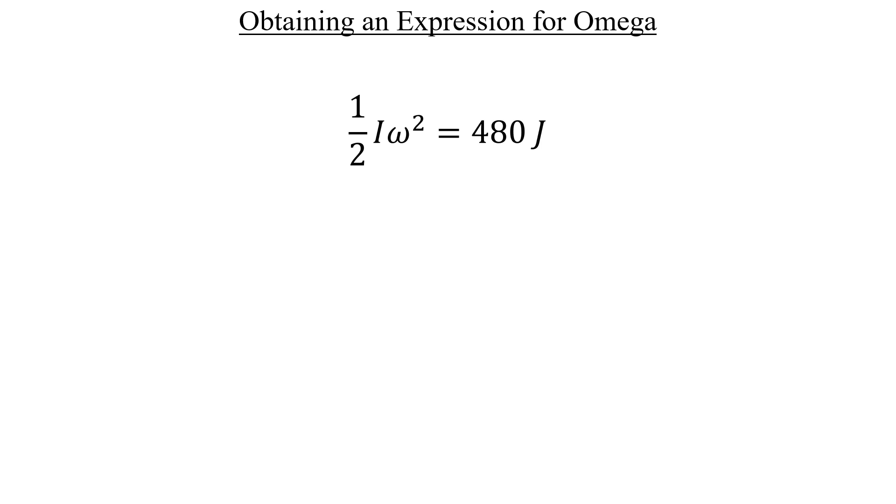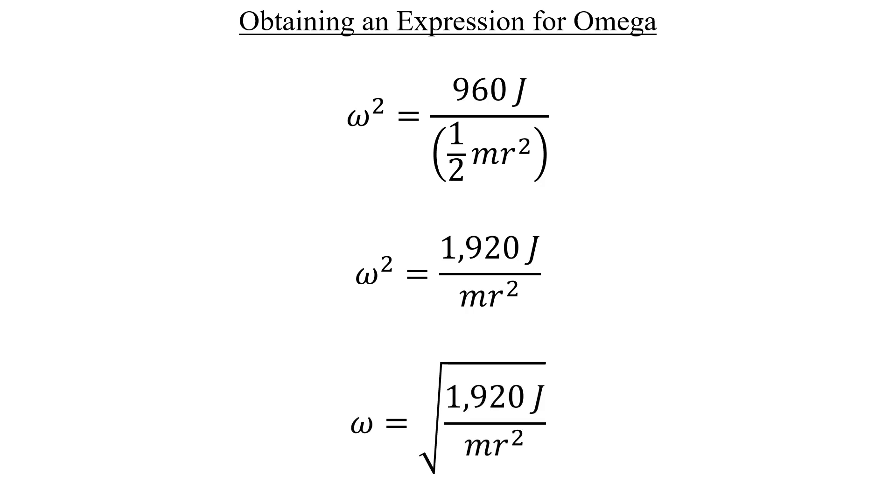Here I've set the cylinder's kinetic energy expression to 480 joules, and we can use this to get an expression for omega. Go ahead and multiply both sides by two, then divide both sides by the moment of inertia. Recall that the moment of inertia for a cylinder is the same as the moment of inertia for a disc, which is one half mr squared. And we can take the one half in the denominator and switch it up into the numerator by multiplying 960 joules by two. Take the square root of both sides, and now omega is ours.